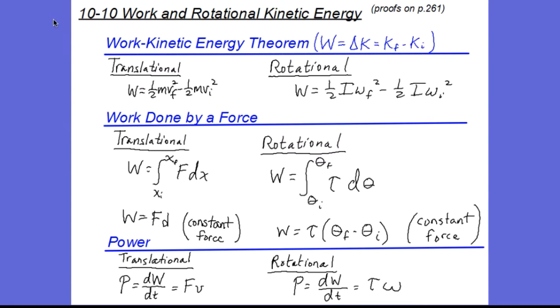Our last section of Chapter 10 deals with work and rotational kinetic energy. Back in Chapter 7, we learned the work kinetic energy theorem that says the net work done on an object results in a change in its kinetic energy. And the equation for translational motion was delta K was 1/2 MV final squared minus 1/2 MV initial squared.